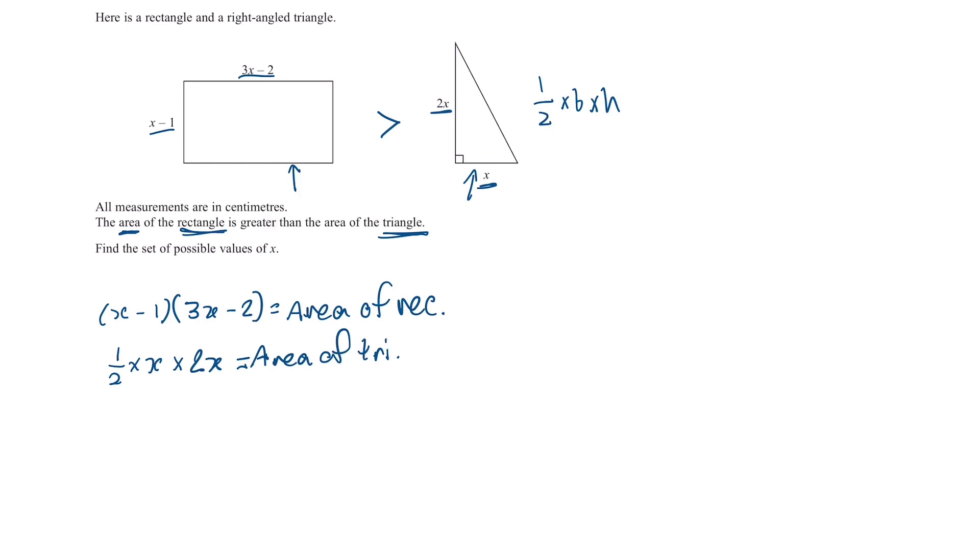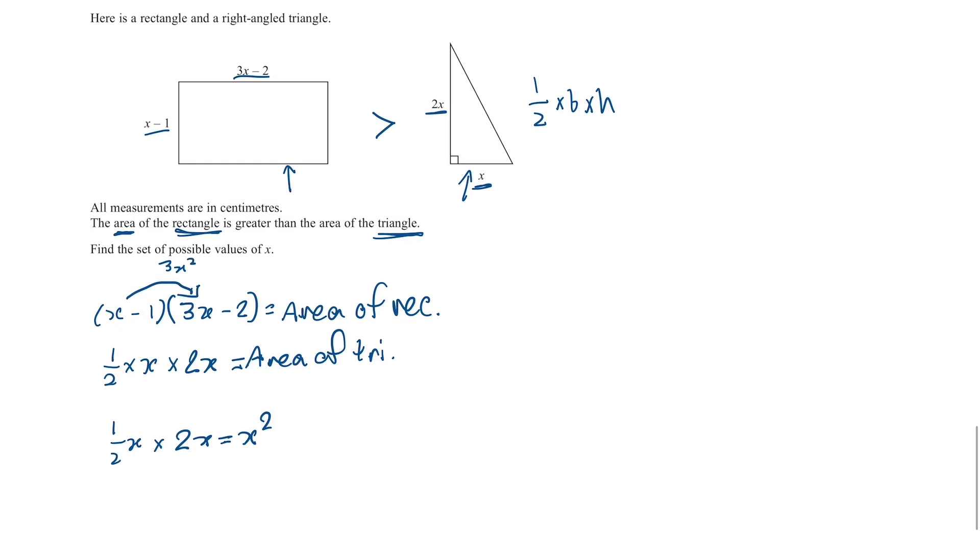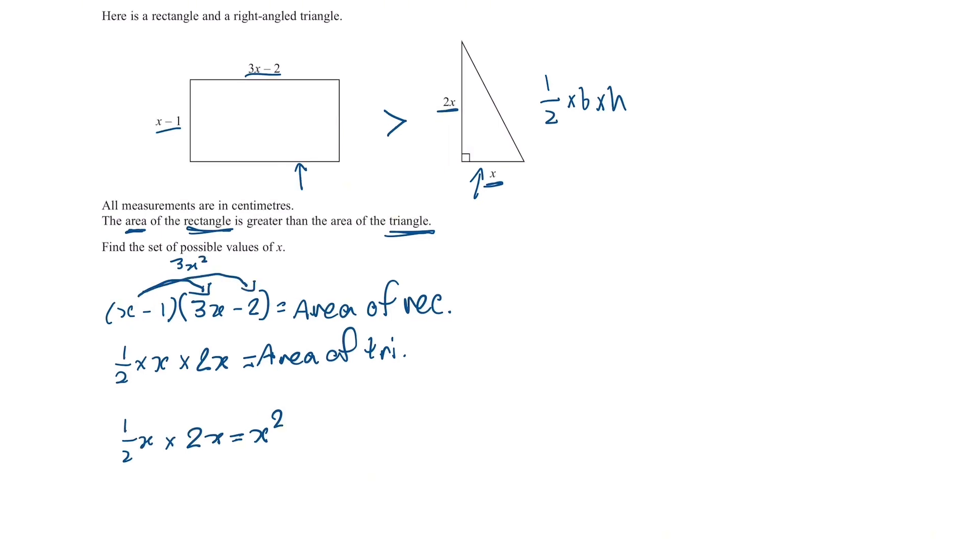We can simplify both those areas. So if we simplify the triangle one we're gonna get we have a half x multiplied by 2x which is just gonna be x squared. Now the area of a rectangle we just expand these brackets. So multiply this so you get 3x squared and you multiply x by this so you get minus 2x here, minus 3x. Finally this minus 1 times minus 2 is plus 2. So the area of a rectangle can be rewritten as 3x squared minus 5x plus 2.